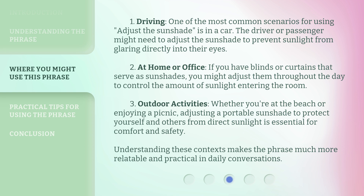One of the most common scenarios for using 'adjust the sunshade' is in a car — the driver or passenger might need to adjust the sunshade to prevent sunlight from glaring directly into their eyes. At home or in the office, if you have blinds or curtains that serve as sunshades, you might adjust them throughout the day to control the amount of sunlight entering the room. For outdoor activities, whether you're at the beach or enjoying a picnic, adjusting a portable sunshade to protect yourself and others from direct sunlight is essential for comfort and safety.